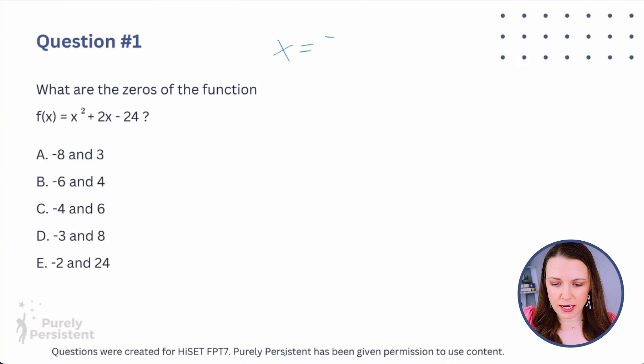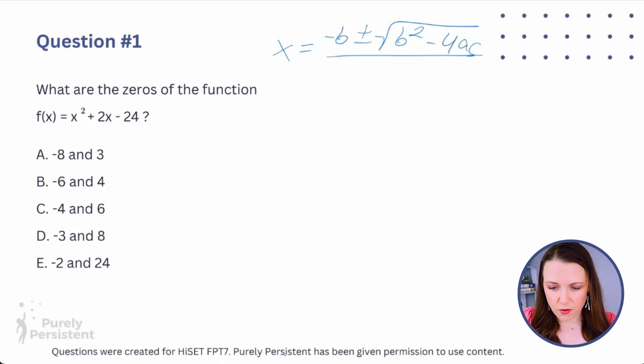As promised, I'm going to show you another way to get the same answer: using the quadratic equation. If you're taking the GED, the quadratic equation will be provided for you. If you're taking the HiSET, it will not — so you have to memorize it. I have a little jingle for you using the tune of 'Pop Goes the Weasel.' The formula is: x = (-b ± √(b² - 4ac)) / 2a.